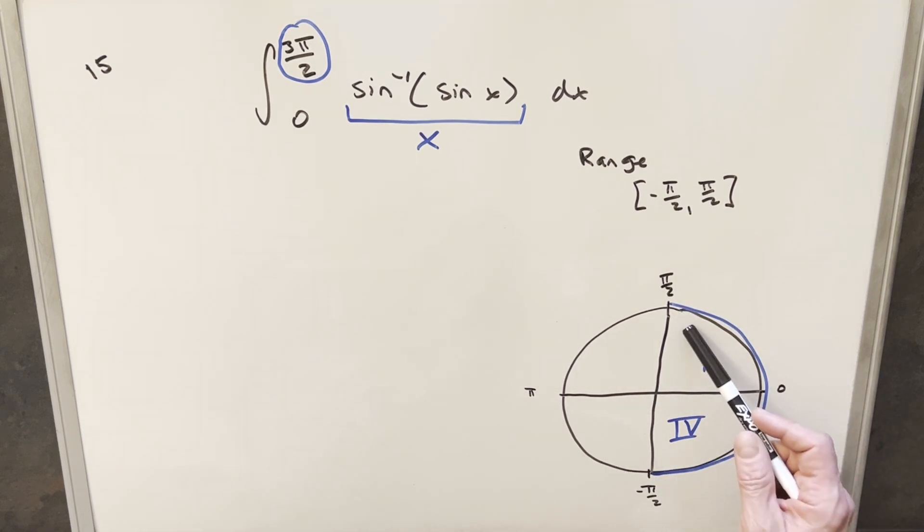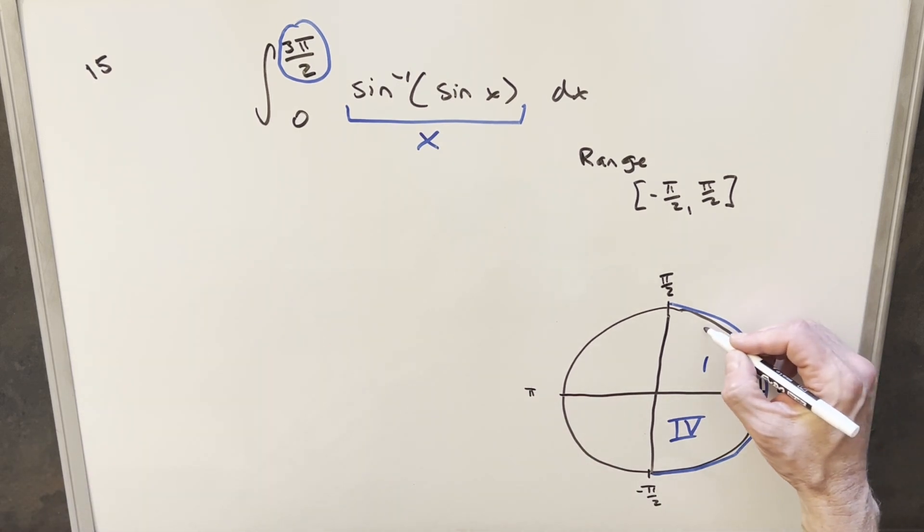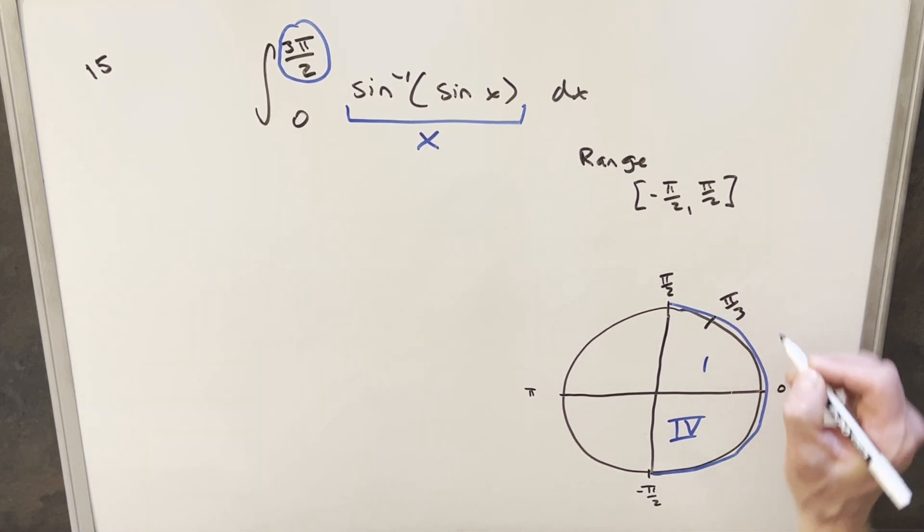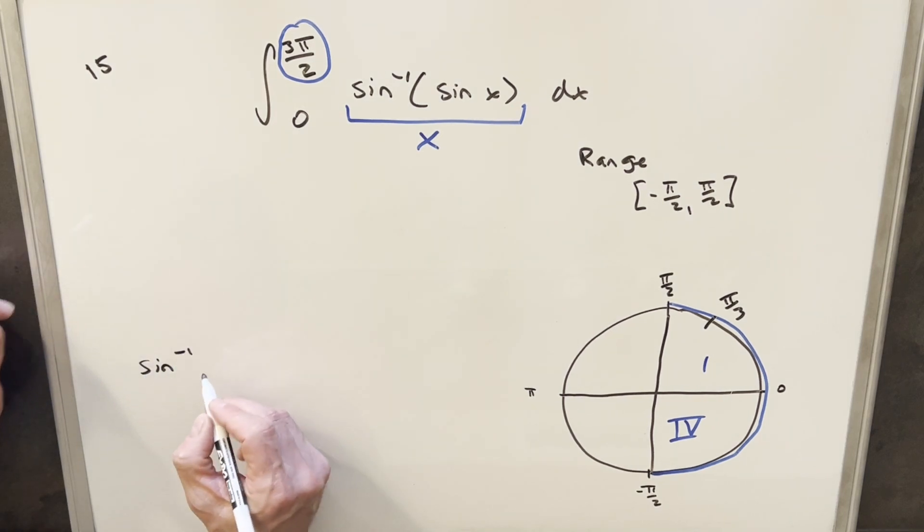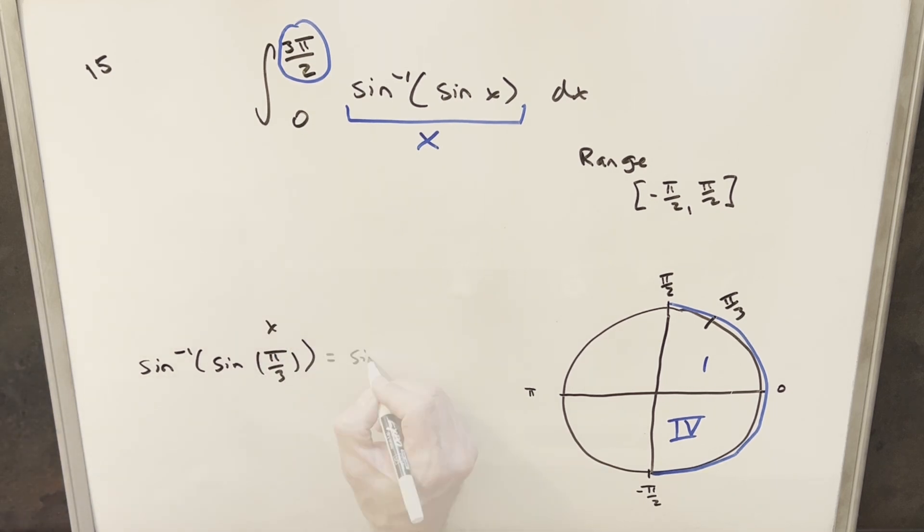And now for our x value, if we choose any of these values over here on the right side between minus π/2 and π/2, we're just going to get back x. So let's see how that works. Let's try a point like π/3. So if I just look at arcsin(sin(π/3)), where this π/3 is going to be our x value, well then sin(π/3), that's going to be √3/2. But then if we evaluate arcsin for √3/2, we just get back π/3. So we show for this value anyway, when we plug in x, we just get back x.